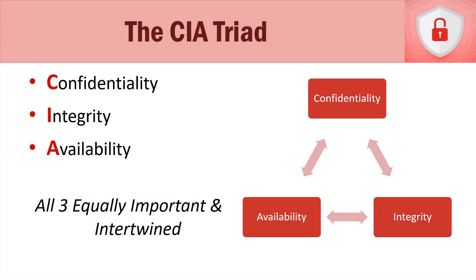In this video, we're going to talk about a very important core security principle that plays a role in everything that we do in cybersecurity and information security, and that is the CIA triad. The CIA triad is one of our most fundamental information security principles, and it means confidentiality, integrity, and availability, as depicted here on the slide.